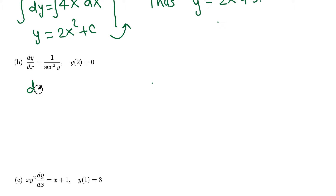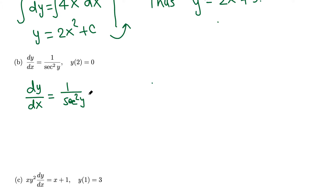For the next problem, we have dy over dx equals 1 over secant squared y. By the way, 1 over secant is cosine, so it is cosine squared y. Since this is a function of y, we move it to the left side — cross-multiplying gives secant squared y dy equals 1 dx.